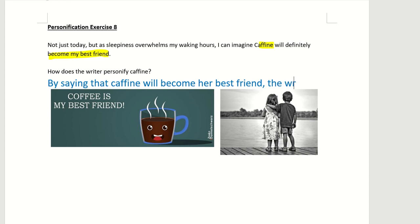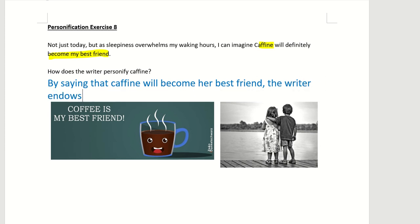The writer endows — and endows means gifts — caffeine, an inanimate substance or object, with human attributes, qualities, or characteristics. All these answers are acceptable.